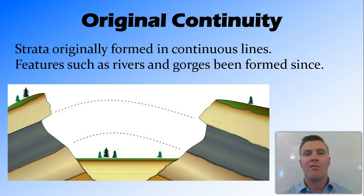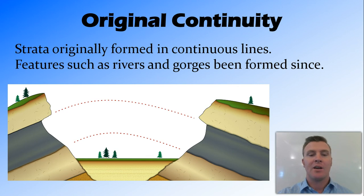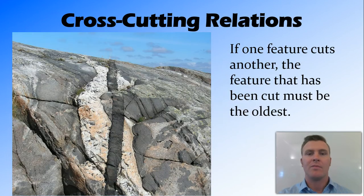Original continuity states that strata are formed in continuous lines, and any features that have carved out those lines were formed after the strata. Looking at this scene, the original horizontality shows there would have been a horizontal strata of three layers — the beige, the gray, then beige again — and this gorge has been carved out of that, probably by weathering from a river.